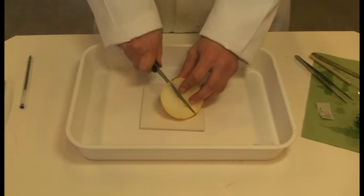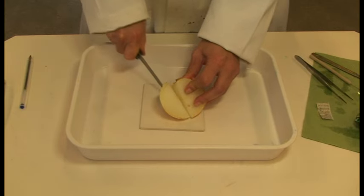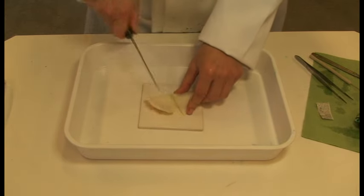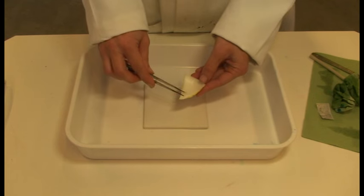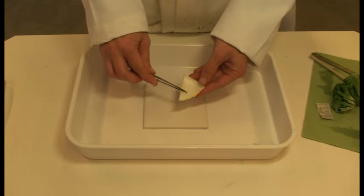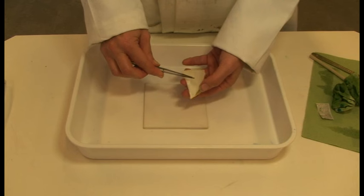Ideally eye protection should be worn. Your teacher will provide you with a small slice of onion. Using the forceps or tweezers peel off one layer of membrane from your onion sample.